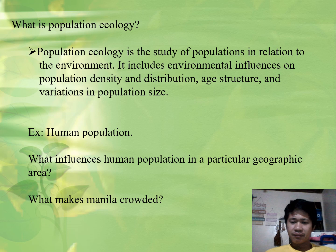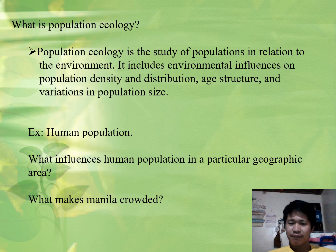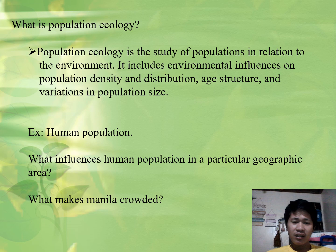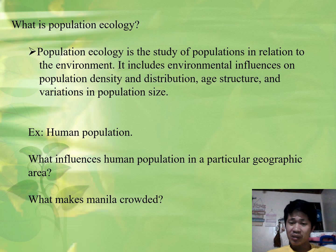So, what is population ecology? By definition, it's the study of population in relation to the environment. It includes environmental influences on population density and distribution, age structure, demography, and variation in population size. So, when you study the changes in a population and the factors affecting those changes — such as the factors affecting size, density, and age structure — that's population ecology. For example, what influences the human population in a particular geographic area? Why does the population increase or decrease in a particular area? What makes Manila crowded compared to the provinces?